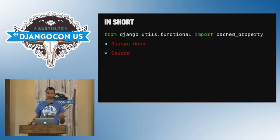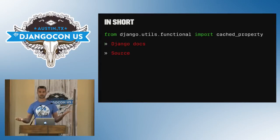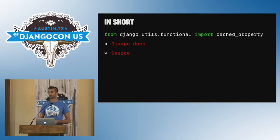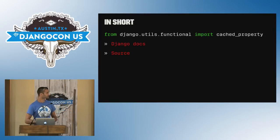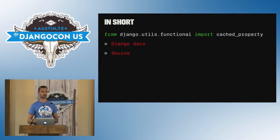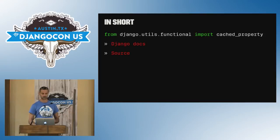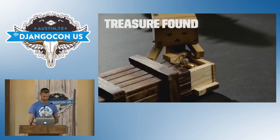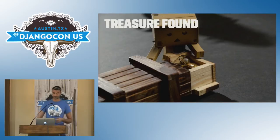And that's it. All you need to know is: from django.utils.functional import cached_property. These links are on the slides if you want to look into references to the docs and the source. So this is our first treasure.